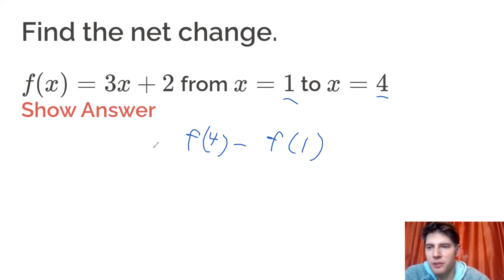we're going to plug the 4 in for f of x, which would be 3 times 4 plus 2. So that's that piece minus. And then f of 1 is just plugging 1 in for x.